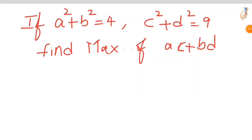Welcome to my channel. Today's question is: if a² plus b² equals 4, c² plus d² equals 9, then find the maximum value of ac plus bd. We are going to solve this using various methods. We can employ techniques from algebra, trigonometry, and even determinants to tackle this problem. Let's see how to solve.